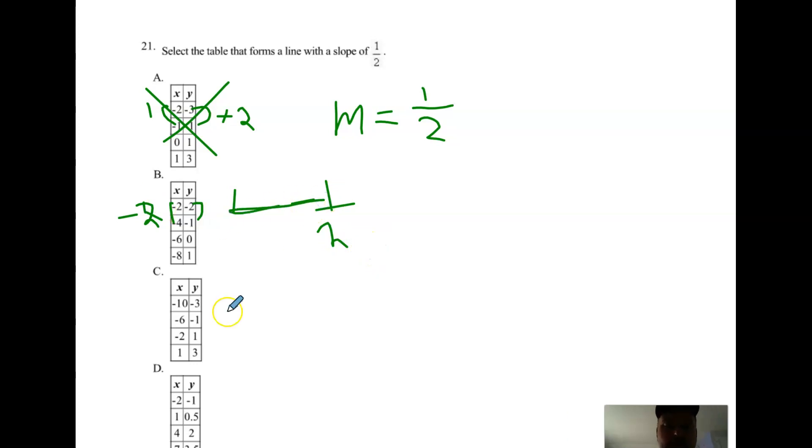So it's not B. C: y's are going up by 2 and x's are going up by 4. Well what's 2 over 4 reduced to? One-half. So I should have had choice C for that one.